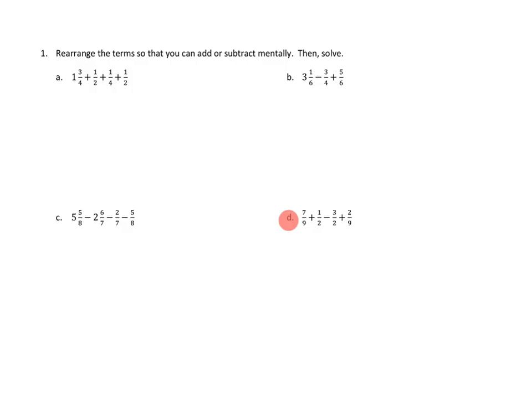Let's take a look at problem number 1. Rearrange the terms so that you can add or subtract mentally, then solve. I'm going to take a look at part D. I want to look at my terms. We have 7 ninths plus 1 half minus 3 halves plus 2 ninths. I'm noticing we have different denominators, but really we only have two different denominators. We have ninths, 7 ninths and 2 ninths, and then we have halves, 1 half minus 3 halves.